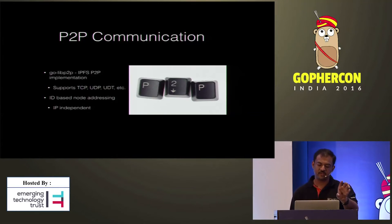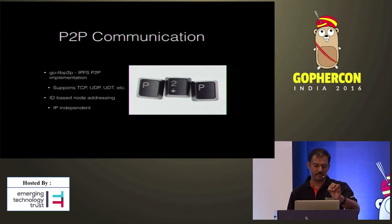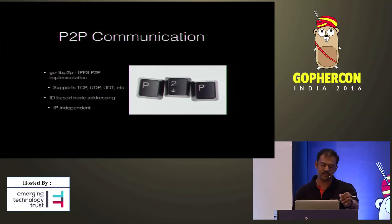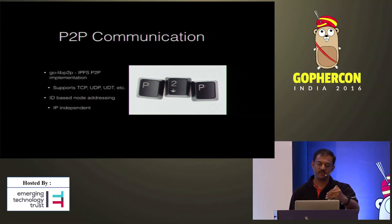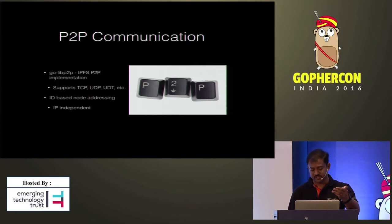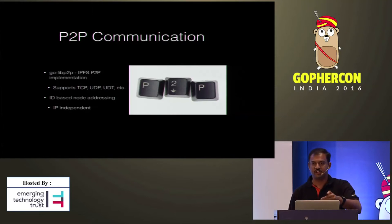The IPFS P2P communication is available as a separate Go package called go-libp2p, which can be used independently from the main IPFS project. It is designed such that the layers of the library can be replaced. For example, there are multiple options in the transport layer — we can use TCP, UDT, or UTP, but we can also plug in our own implementation.